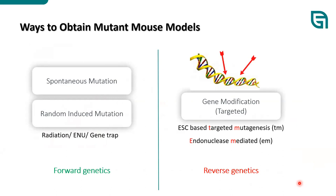When we use animals as models for medical research, we need to obtain mutants to study gene function and the relationship between genes, phenotypes, and consequences. In the earliest days, people used spontaneous mutations from natural breeding or used physical, chemical, or biological methods to randomly induce mutations, such as X-ray radiation, ENU, gene trap, or retrovirus infection. These methods are collectively called forward genetics.